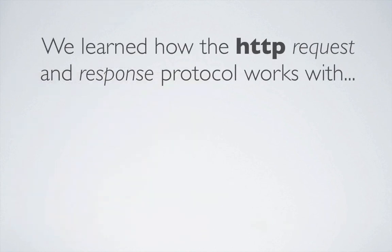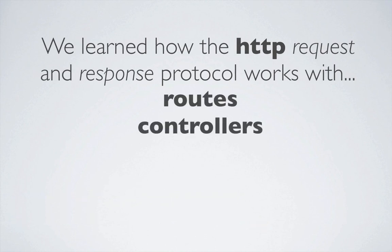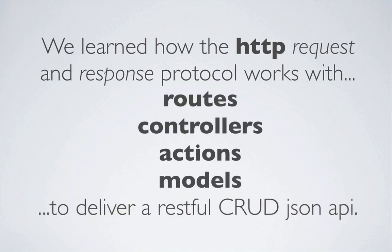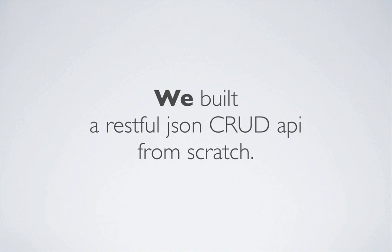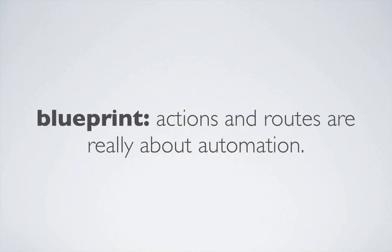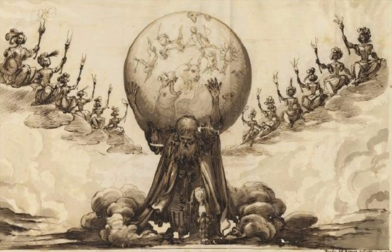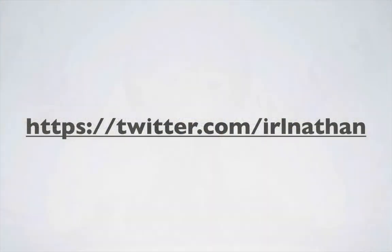In this series, we've learned the concepts of how to use the HTTP request response protocol with routes, controllers, actions, and models to deliver a RESTful JSON CRUD API. Using those concepts, we built the API from scratch, and hopefully after this episode it becomes apparent that blueprint actions and routes are really about automation — that is, eliminating the necessity of writing, at least initially, repetitive actions and routes during development. We've covered a lot of material in these three series, and I hope you found it helpful. As always, thanks for watching, and if you get a chance, follow me on Twitter at Earl Nathan.